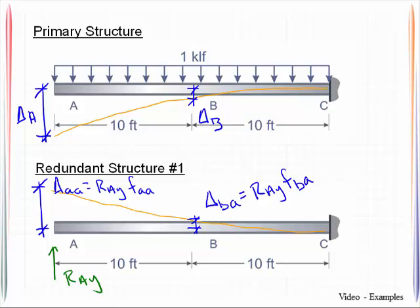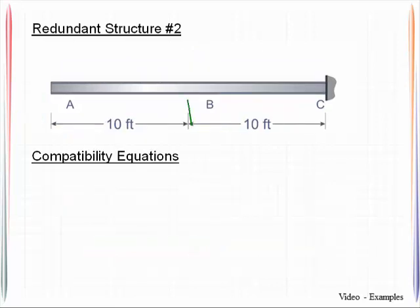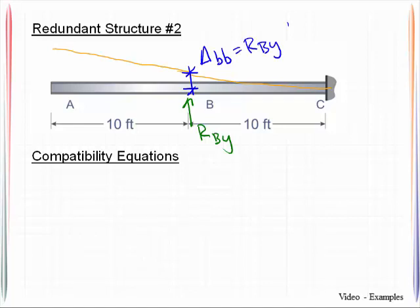Now we're ready to move on to the second redundant structure. So we'll put our unknown redundant force, RBY. We'll make a sketch of the deflected shape here. And then let's go ahead and label these displacements. So this is the displacement at B due to force at B, rewritten in terms of the redundant force. It's RBY times the flexibility coefficient. And let's go ahead and get this one, which is delta A.